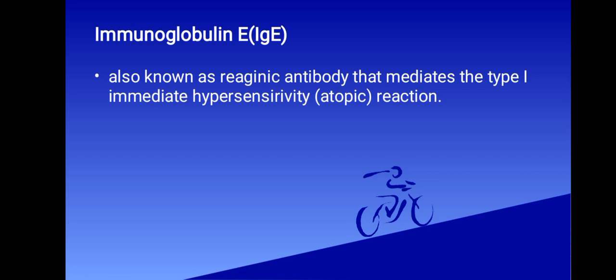Now we are going to look at immunoglobulin M. IgM is basically a pentamer composed of five immunoglobulin monomeric subunits and one molecule of J chain. There are two subclasses, IgM1 and IgM2, defined by their chains. IgM is highly efficient in activating the classical complement pathway. It is the immunoglobulin expressed on the surface of B cells where it serves as an antigen receptor, gives the primary immune response, and also acts as an agglutinin, opsonin, lysin, and complement-fixing antibody.